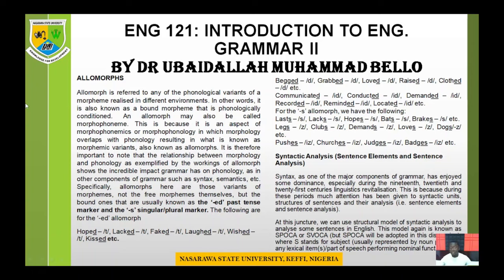Specifically, allomorphs are those variants of morphemes — not the free morphemes themselves but the bound ones — usually known as the '-ed' past tense marker and the '-s' singular and plural marker. These two are the ones we call bound morphemes that can also be called allomorphs. It is not everywhere you see this '-s' or '-ed' inflectional morphemic item that you can just conclude their pronunciations. We have to look at what phonological context or condition they appear in.